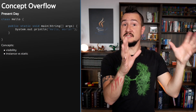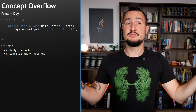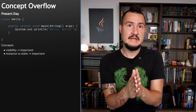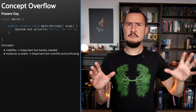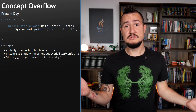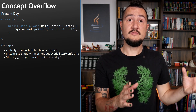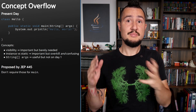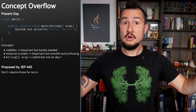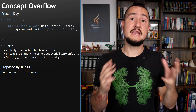Visibility and instance versus static are proper programming concepts that help us structure large programs. For simple scripts, typically in a single source file, they're overkill and come with a lot of baggage for a beginner to grok. The args argument array is more useful, but also often not needed early on. So JEP 445 proposes to no longer require public, static, and args for the main method — meaning any or even all of those pieces can be absent.